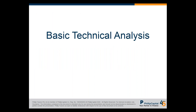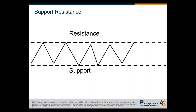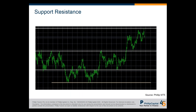Now let's go to some basic technical analysis. This is a support and resistance line. Resistance is the price level at the top, where we draw a horizontal line. Support is the level at the bottom. Support and resistance are levels where the price reaches but cannot break through. The platform provides tools to draw these lines, and you can use them to plan your strategy or capture breakout movements of the market.